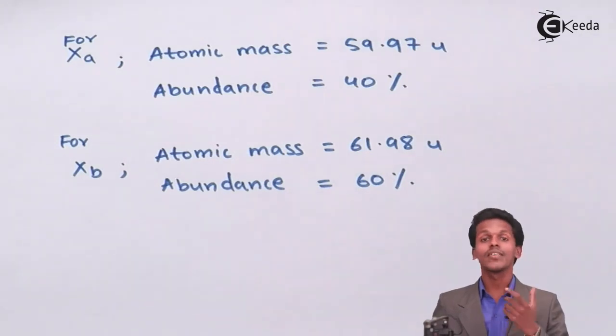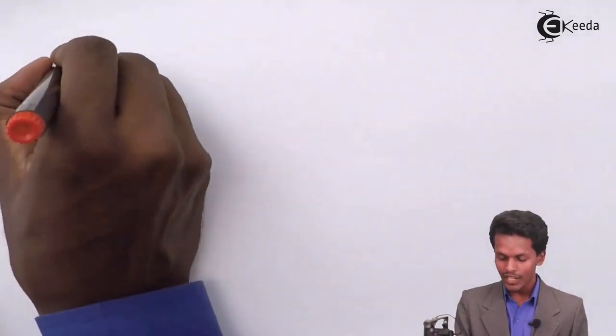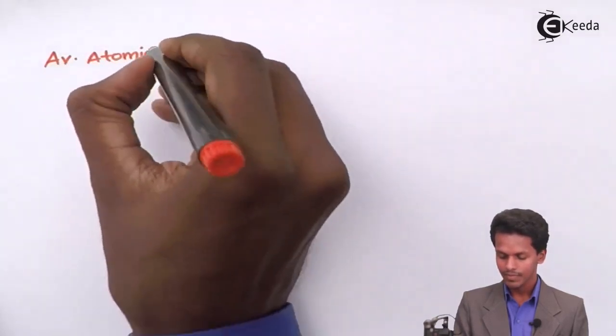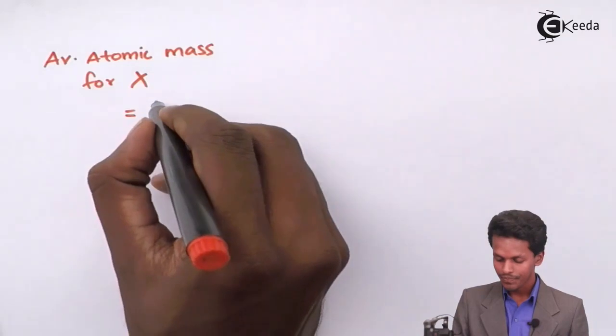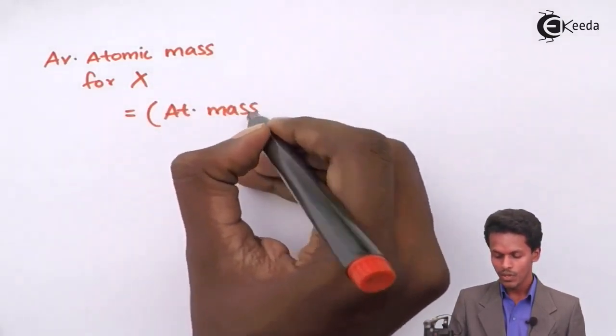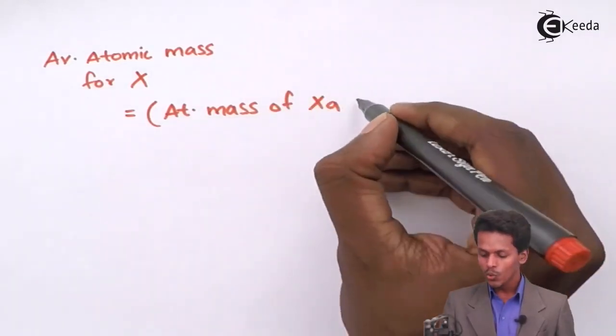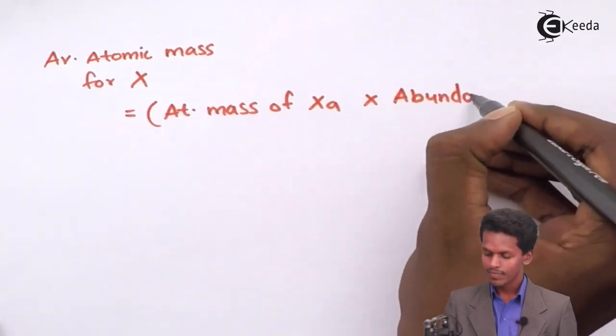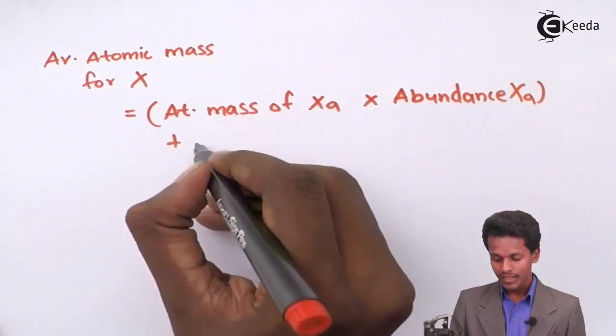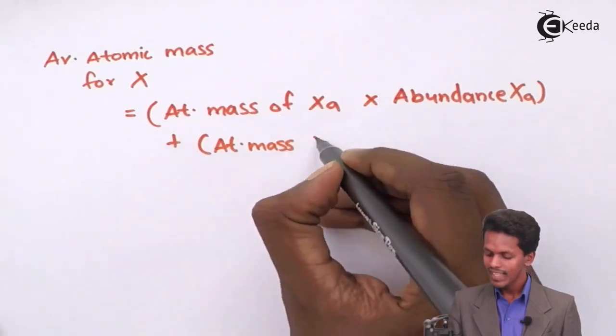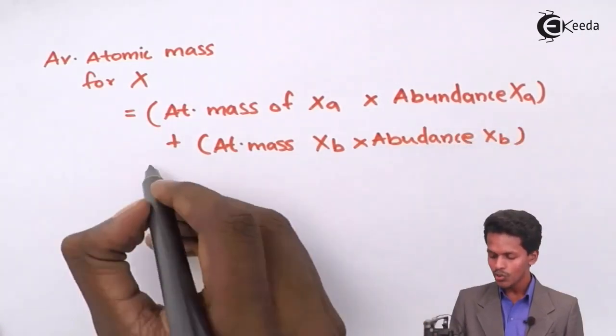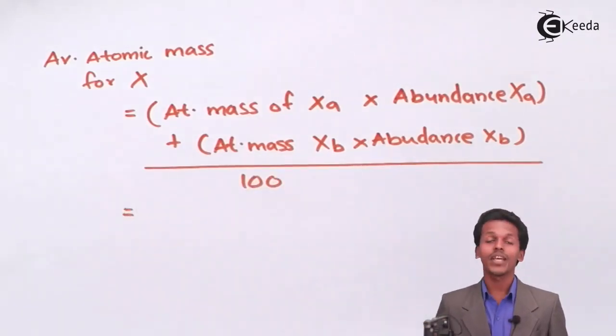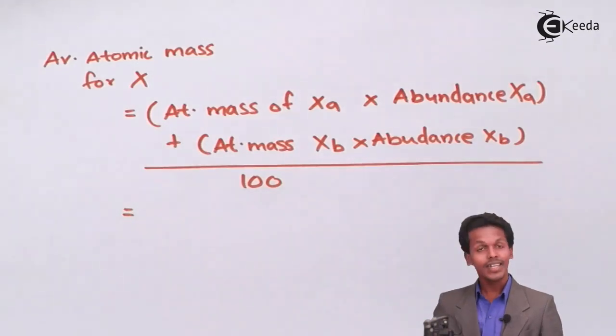Let's follow the formula. The average atomic mass for X is: (atomic mass of XA × abundance of XA) + (atomic mass of XB × abundance of XB), divided by 100. Now we substitute the values in this formula and see what answer we get.